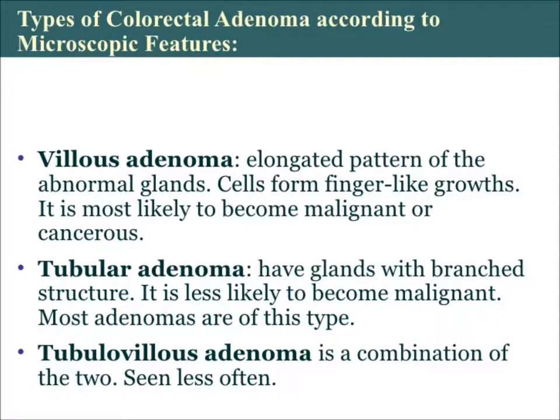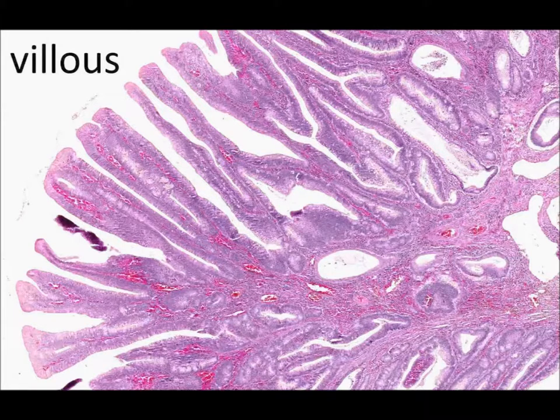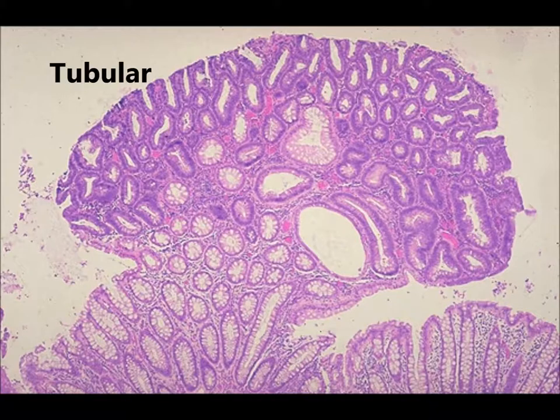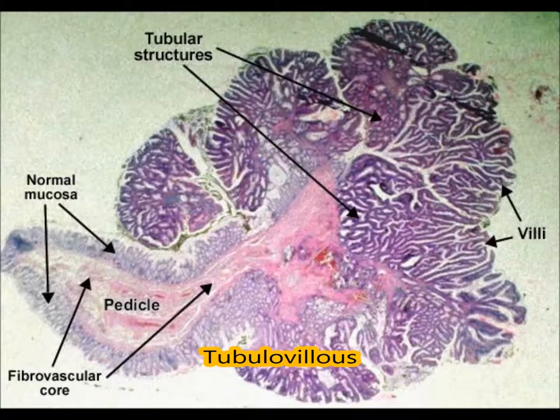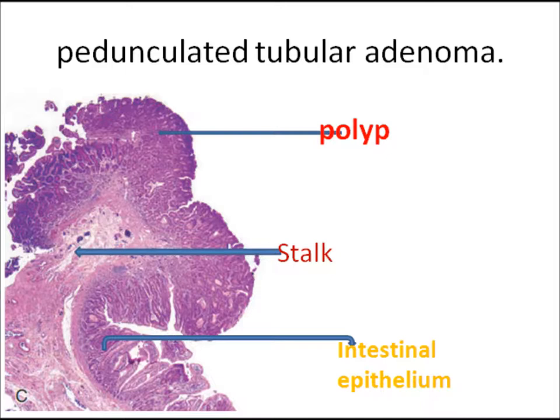Colonic adenomas can be classified according to microscopic features into villous adenoma, tubular adenoma, and tubulo-villous adenoma. Villous adenomas show microscopically finger-like projections. Tubular adenomas show closely packed tubular structures in the lamina propria. Tubulo-villous adenomas show both tubular structures as well as villi.